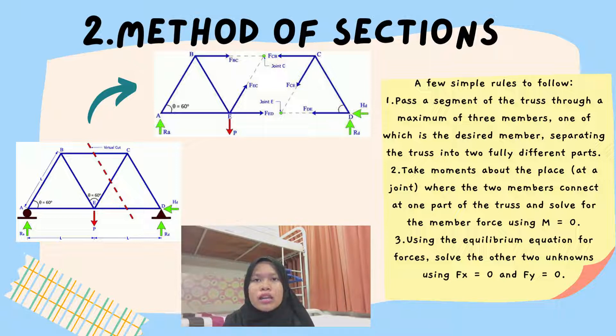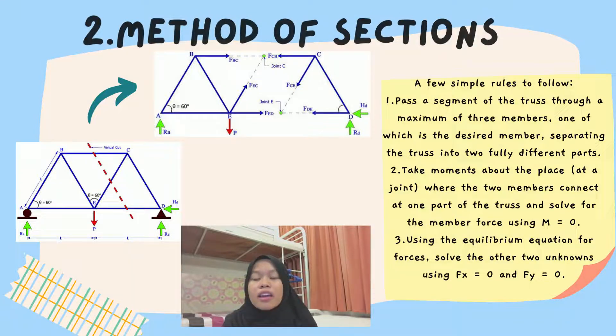A virtual cut is made along members BC, DE, and ED, which are the required members. To begin, the reactions RA and RD must be identified. Strong judgment is necessary to solve this problem, where a simplified solution is considered, either the left or the right side. Taking moments at joint D or C, the section will be considered. The point of moments can be done at either joint D or C, or the joint technique can be used to obtain the other member forces such as FCB, FCE, and FDE.